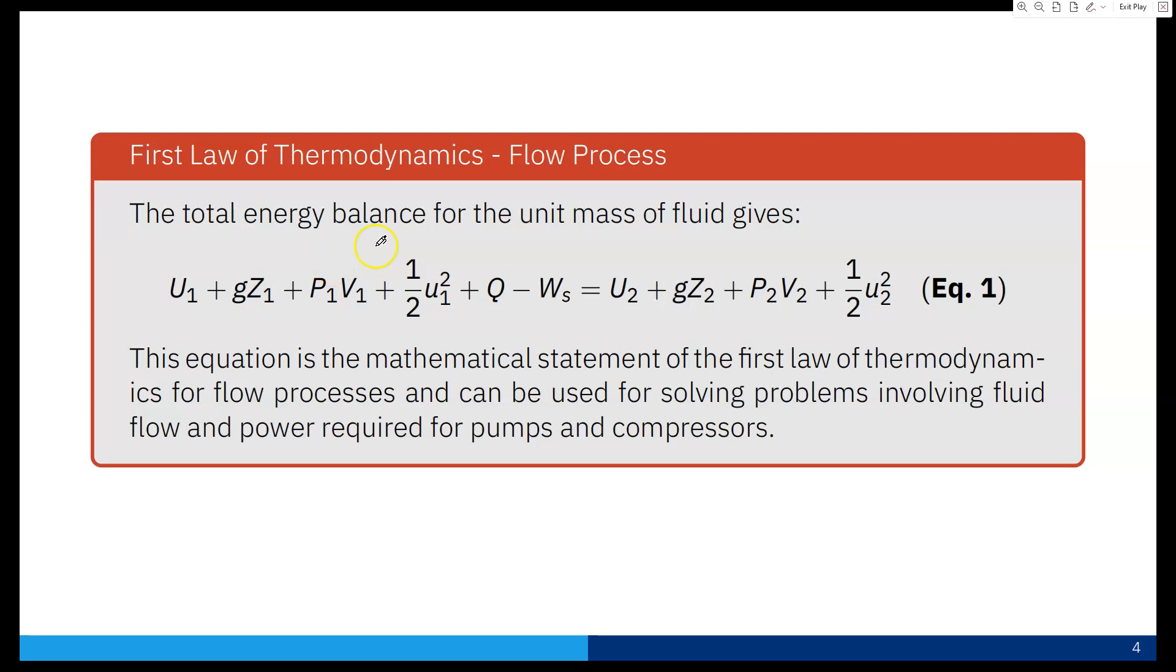Taking all this energy at point 1 and point 2, the total energy balance for the unit mass of fluid becomes: U₁ (internal energy) + gz₁ (potential energy) + P₁V₁ (flow energy) + ½u₁² (kinetic energy) + Q (heat added) - W (shaft work going out) equals U₂ + gz₂ + P₂V₂ + ½u₂². This is equation 1, the mathematical statement of the first law of thermodynamics for flow process, and can be used for solving problems involving fluid flow and power required for pumps and compressors.